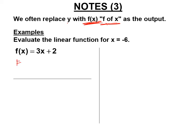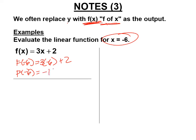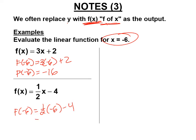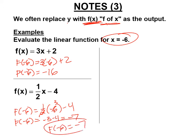Let's evaluate using function notation. For f(x) = 3x + 2, f(-6) = 3 times -6 plus 2 = -18 + 2 = -16. For f(x) = (1/2)x - 4, f(-6) = (1/2)(-6) - 4 = -3 - 4 = -7. Both are linear functions written in slope-intercept form using function notation.